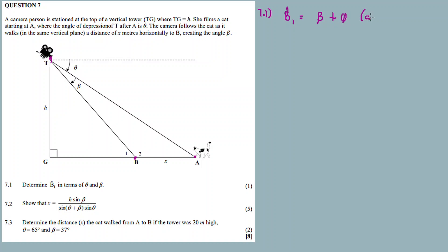Why are they equal? It's because of alternating angles. This angle is equal to this angle — they are alternating angles.